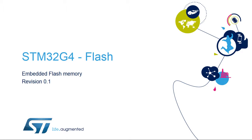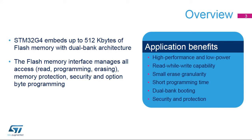Hello and welcome to this presentation of the embedded flash memory included in all products of the STM32G4 microcontroller family. The STM32G4 microcontrollers embed up to 512 kilobytes of flash memory with dual bank architecture. The flash memory interface manages all memory access — read, programming and erasing — as well as memory protection, security and option bytes. Applications using this flash memory interface benefit from its high performance together with low power access.